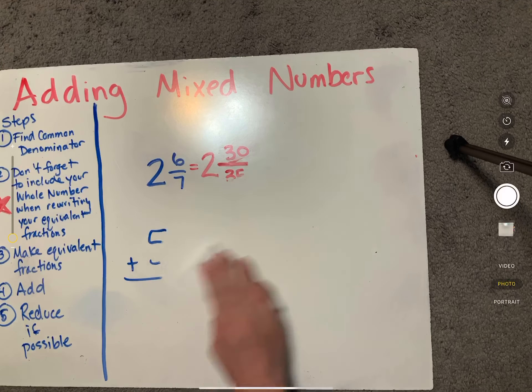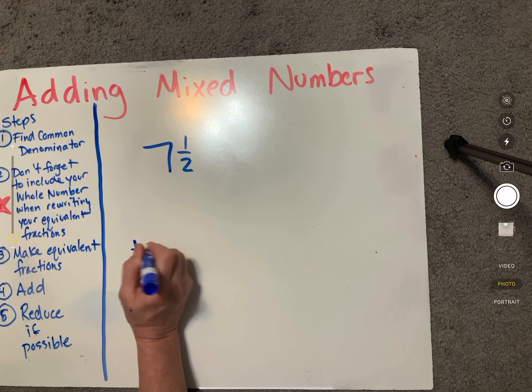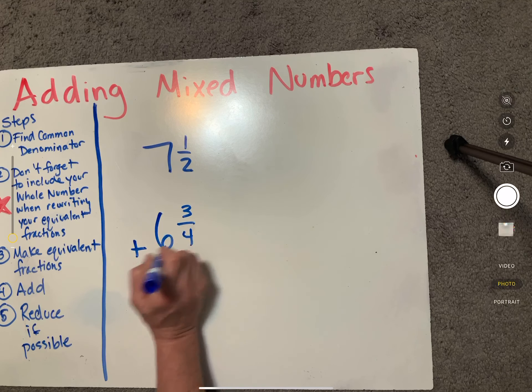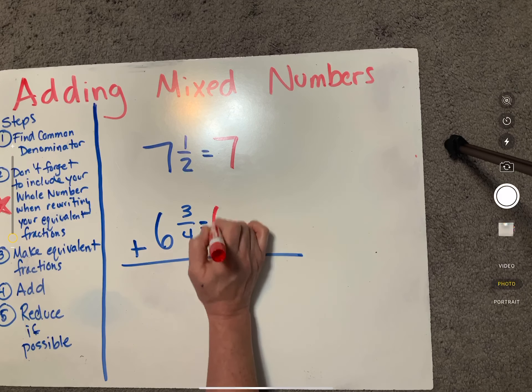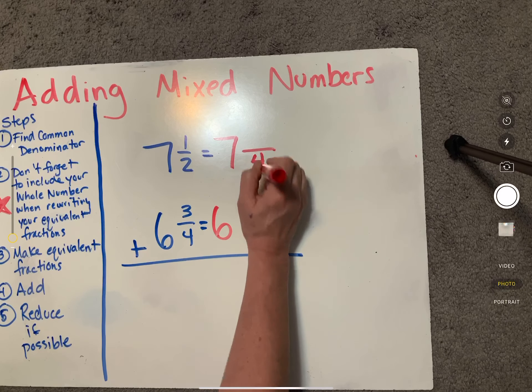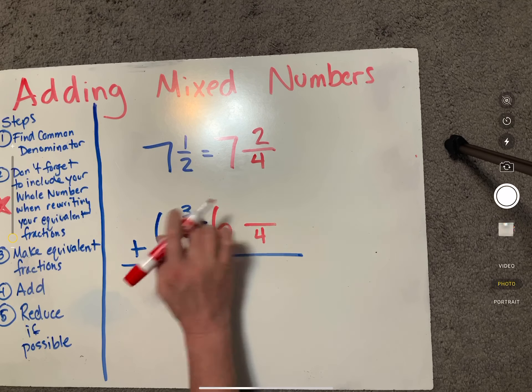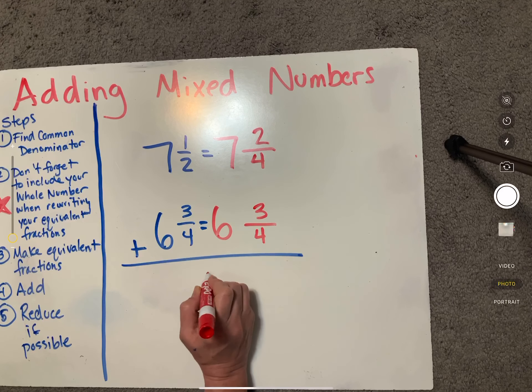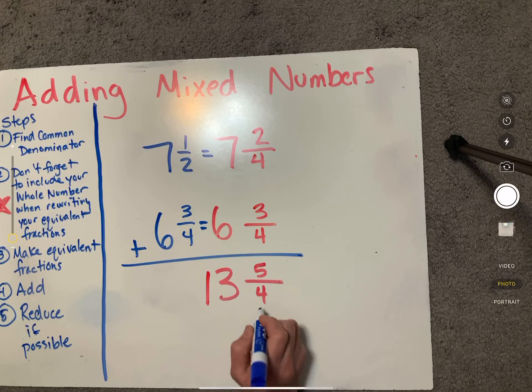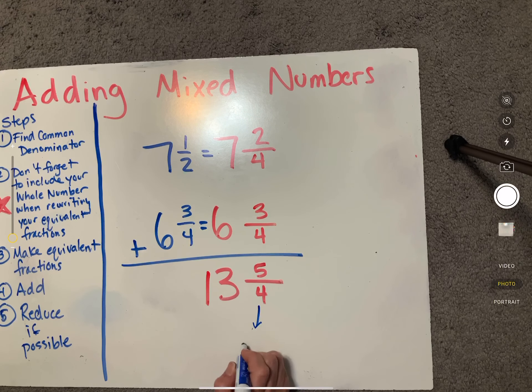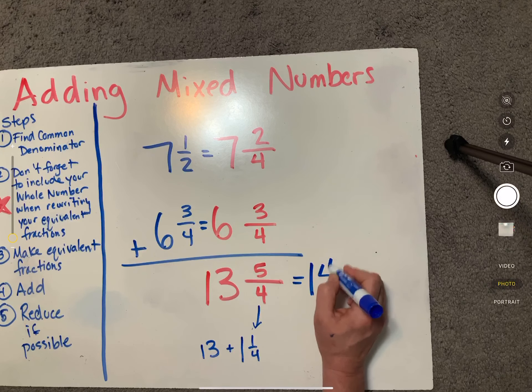Let's do seven and one half plus six and three fourths. Again, transfer that whole number seven and six. Our common denominator here is going to be four. Two times two is four, one times two is two. Four times one is four, three times one is three. Add these up. Seven plus six is 13, common denominator four. Two plus three is five. Same thing, this is going to be improper. If I was going to change this to a mixed number, it would be one and one fourth plus that 13. So my answer to this is going to be 14 and one fourth.